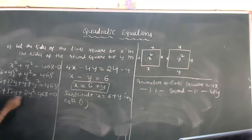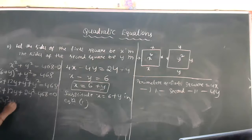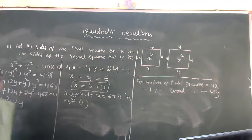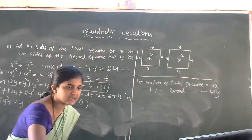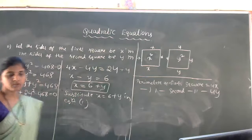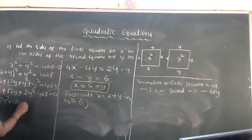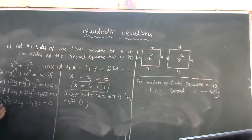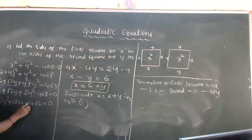Combining terms: 2y² + 12y + 36 = 468. Moving 468 to the left side: 2y² + 12y + 36 − 468 = 0, which gives 2y² + 12y − 432 = 0.